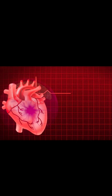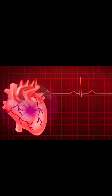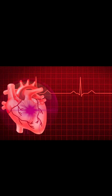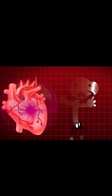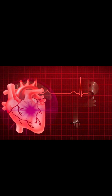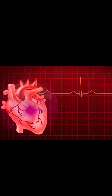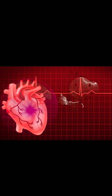Blood supply of the human heart. The human heart receives its blood supply through the coronary circulation, which includes coronary arteries and coronary veins. Arterial supply — coronary arteries. The coronary arteries are the first branches of the ascending aorta and supply oxygenated blood to the heart muscle, the myocardium.